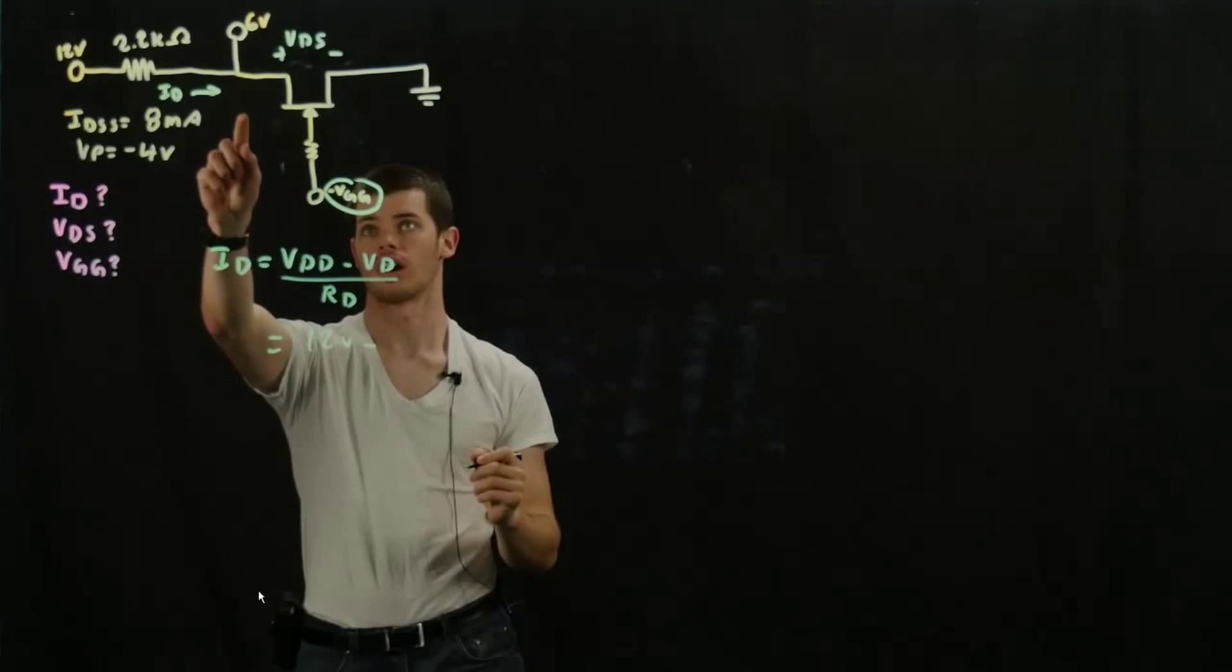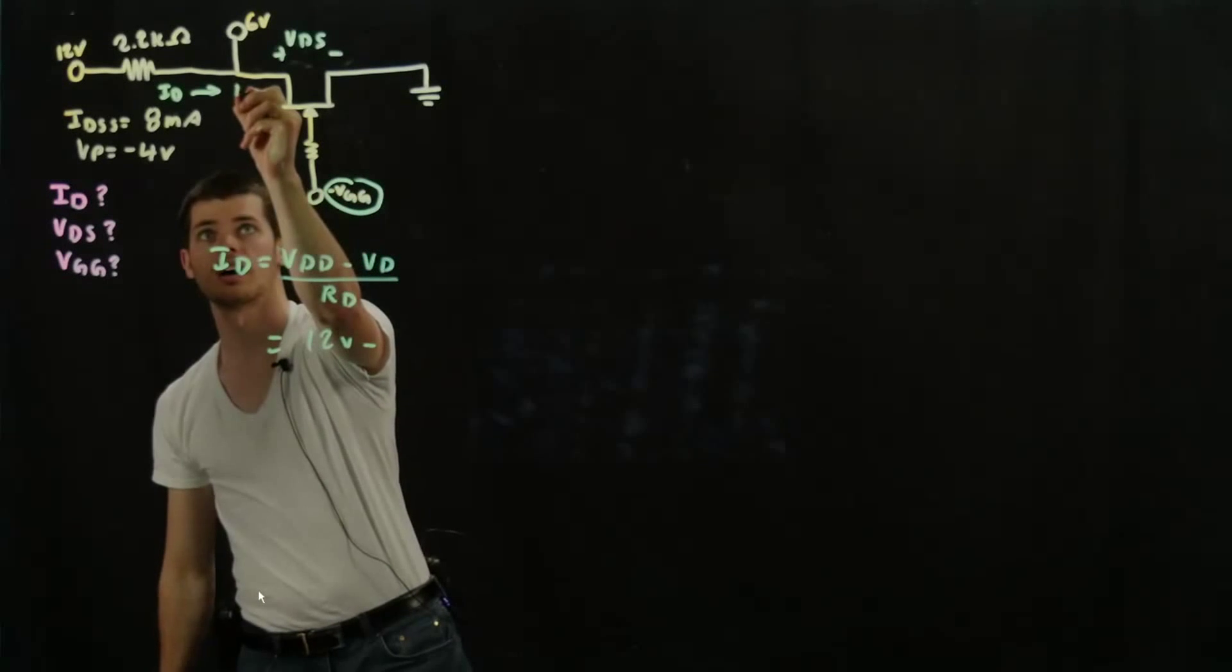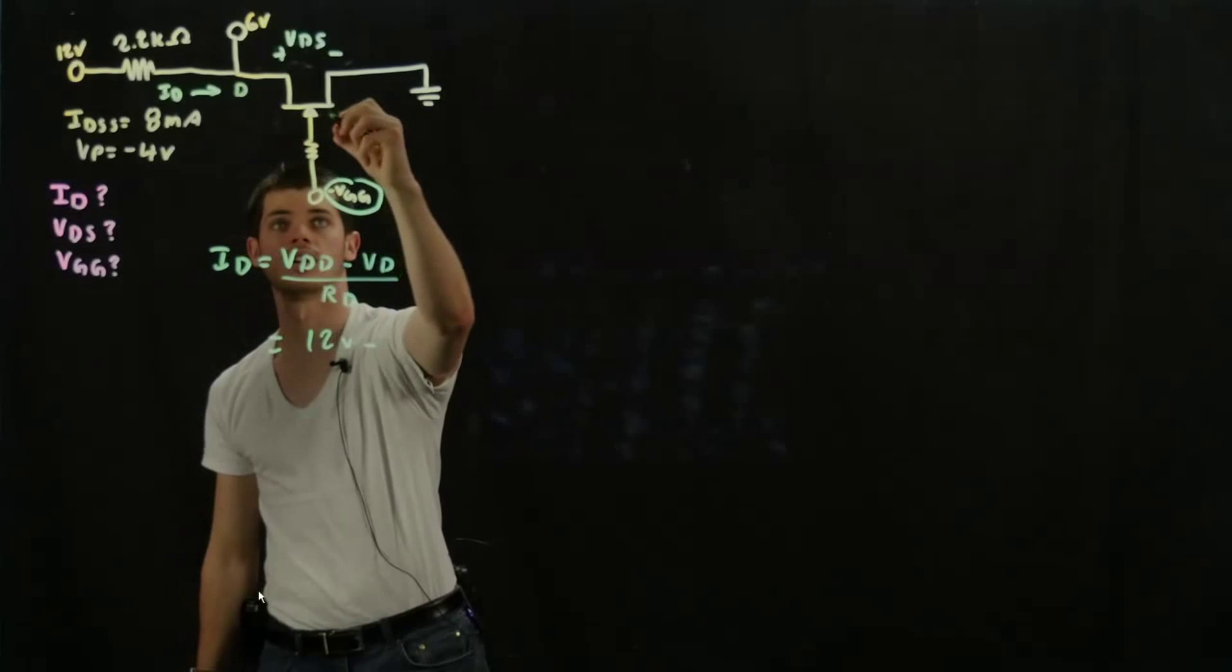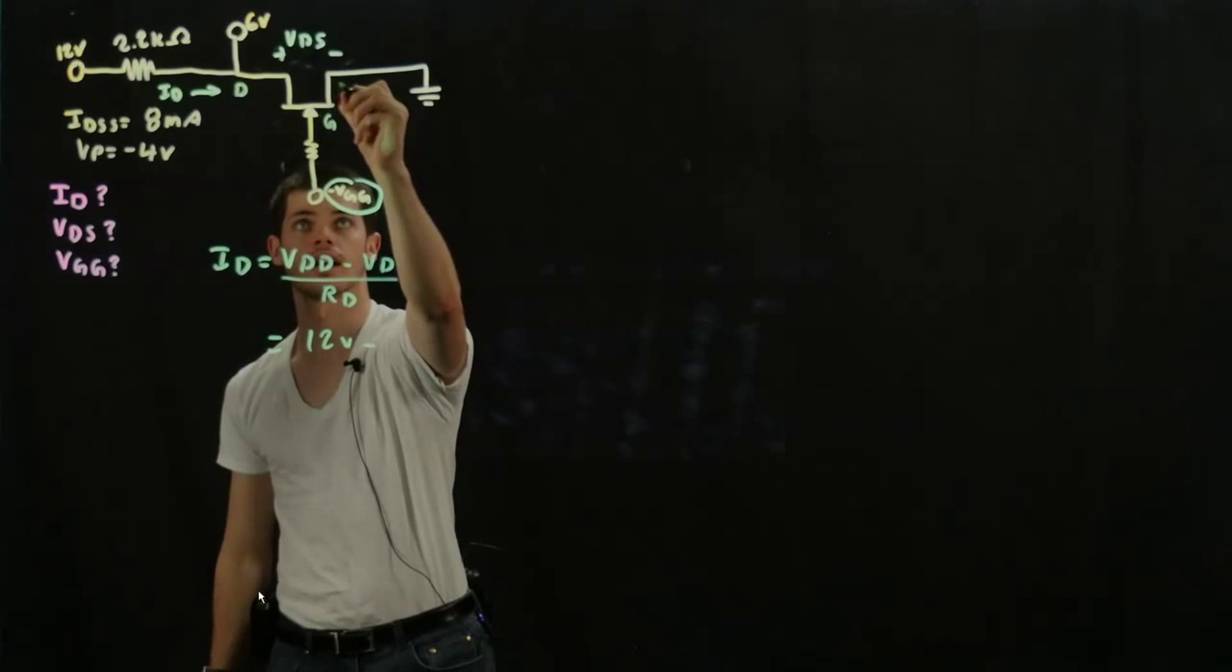VD is our voltage at the drain. So just for some labeling here, we have the drain, we have the gate, and we have the source.